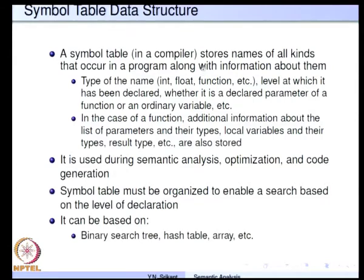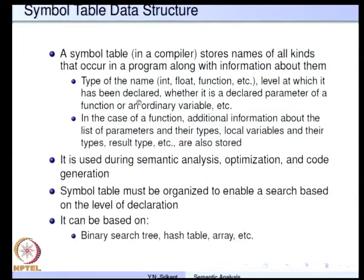A symbol table stores names of all kinds that occur in a program along with information about them — for example, the type of the name, whether it is an integer or a floating point number or a function. The level at which it has been declared is also stored, since it is possible to have blocks in C, Pascal, and Algol, where procedures and functions can be embedded within other procedures and functions. The level of the block and whether a name is a declared parameter or an ordinary variable must all be stored along with the name itself.